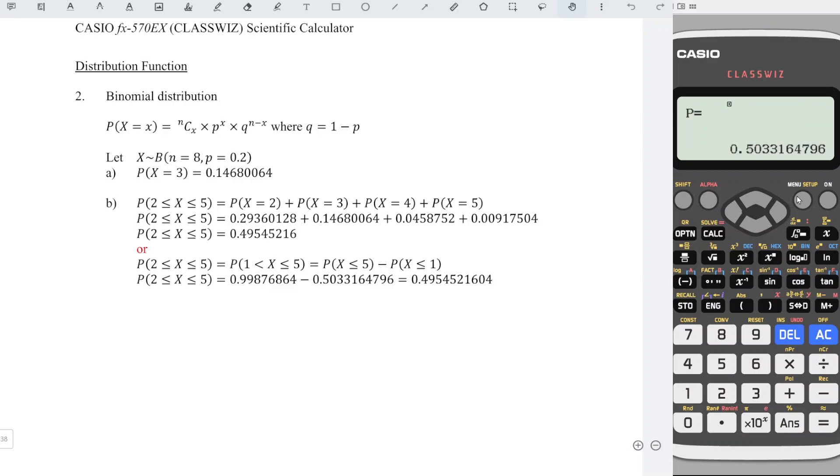Again, press menu. Go back to the first function, calculate. Alphabet a minus alphabet b. Press equal. And we should obtain the correct probability.